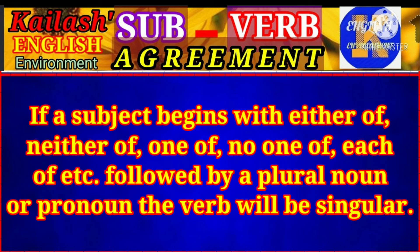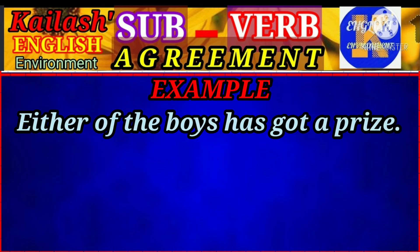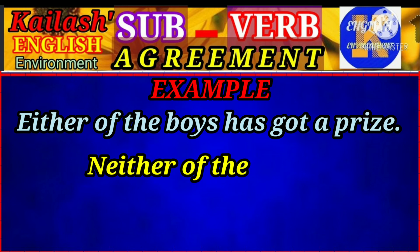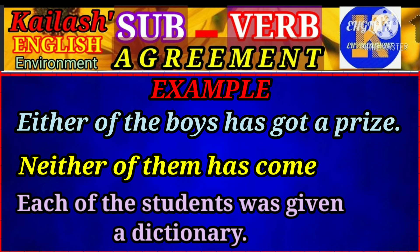If a subject begins with 'either of,' 'neither of,' 'one of,' 'no one of,' 'each of,' followed by a plural noun or pronoun, the verb will always be singular. For example, 'Either of the boys has got a prize.' 'Neither of them has come.' 'Each of the students was given a dictionary.'